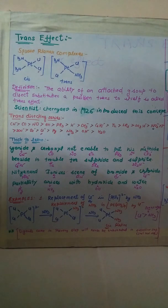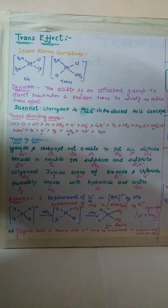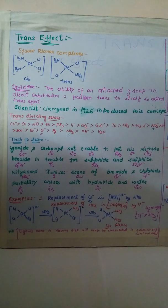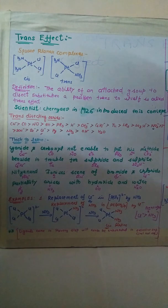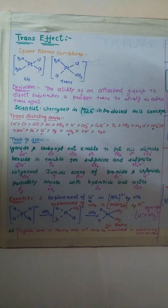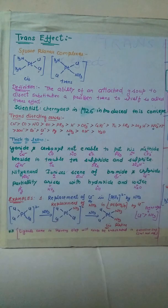Trans effect is basically observed in square planar complexes. In square planar complexes, four ligands are present in a plane. There are two types of isomers possible: cis and trans. In cis isomers, the same type of ligands lie on the same side. In trans isomers, the same type of ligands lie opposite to one another. Trans effect is observed in substitution reactions in square planar complexes.